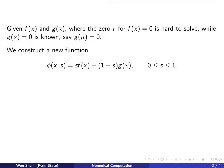We now construct a new function, call it phi, and it's a function of x, and it has a parameter that we can adjust. We call it s. So the function is s times f plus 1 minus s times g. And here, s is a parameter ranging from 0 to 1.